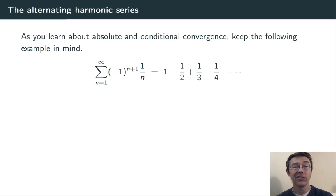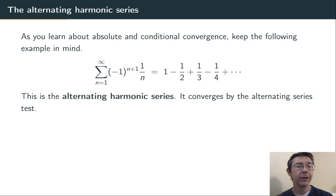Throughout this talk, you should keep this example in mind. 1 minus 1 half plus 1 third minus 1 quarter and so on. It's the so-called alternating harmonic series. It converges by the alternating series test. 1 over n is decreasing and going towards 0, and the series is alternating.